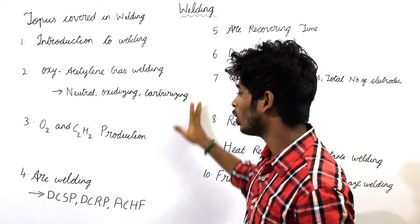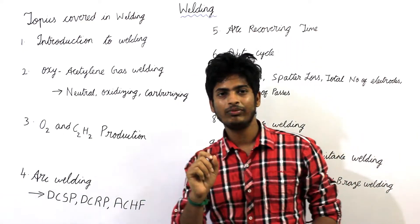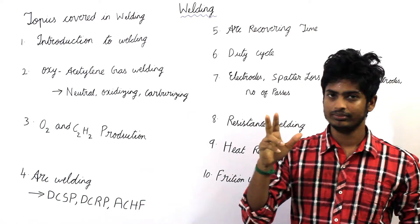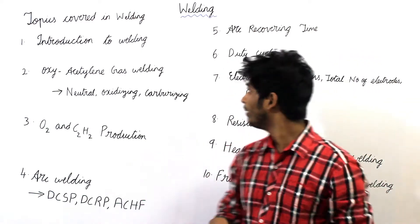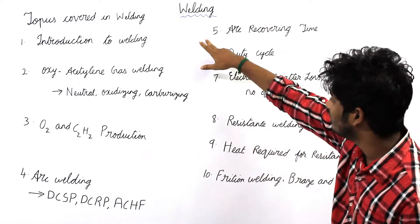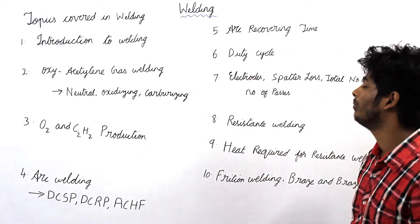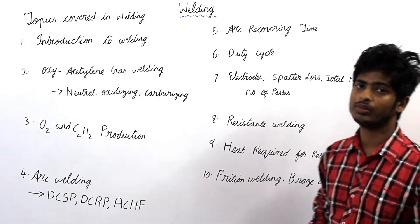Topics one to four are mainly covered for objective type theory questions. But topics five, six, seven, nine, and ten are mainly used for solving problems.